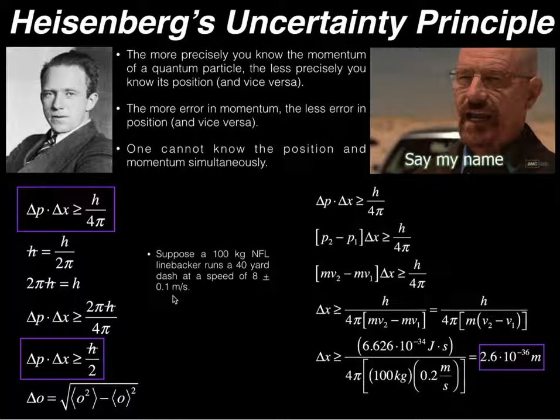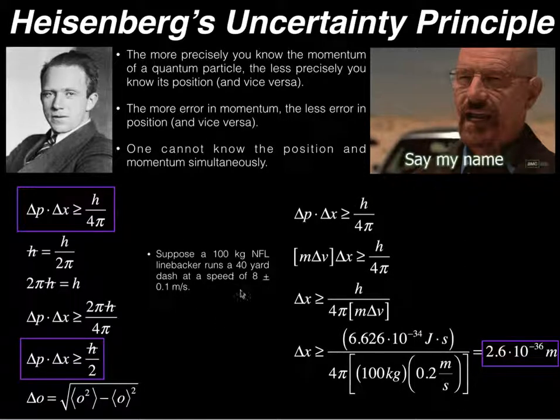So we know that with any measurement, regardless of what it is, whether it's on the classical or quantum scale, there's error. So they probably clocked this guy at going 8 meters per second, but there's some uncertainty. It could be 0.1 meters per second above 8 or below. All right, so let's calculate the uncertainty in his position.